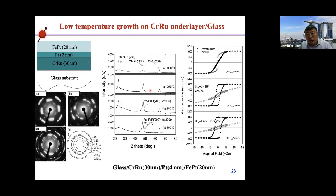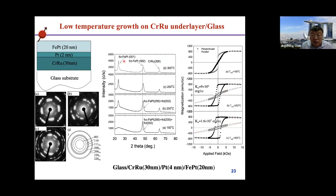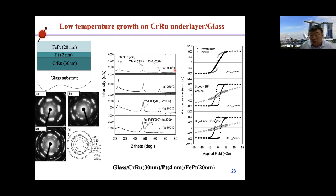We then transferred the whole process onto a glass substrate (not single crystal). We demonstrated that even at very low temperature — 300°C — we can get very good [001] L10 FePt phase. Compared to bulk, we have reduced the ordering temperature by more than 300°C. Definitely, if we want higher anisotropy we need 400°C, but the glass substrate melting point makes it impractical above 400°C for industrial applications.